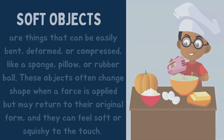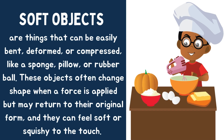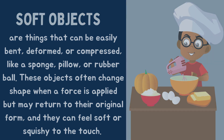Soft objects are things that can be easily bent, deformed, or compressed. These objects often change shape when a force is applied but may return to their original form, and they can feel soft or squishy to the touch.